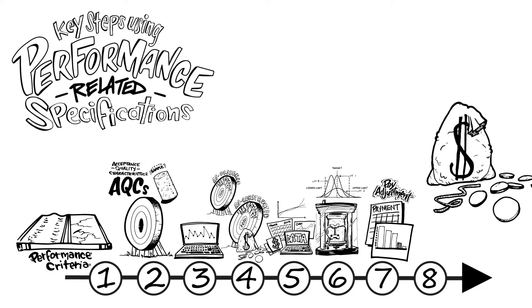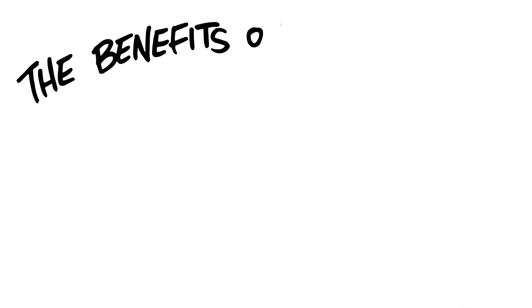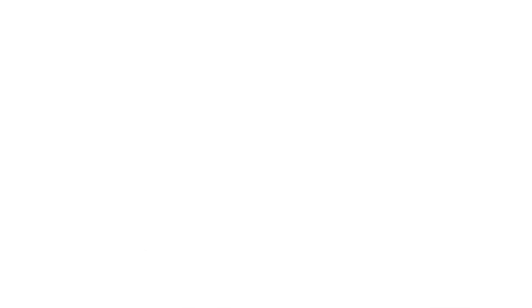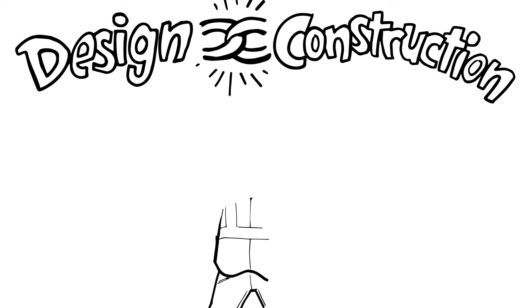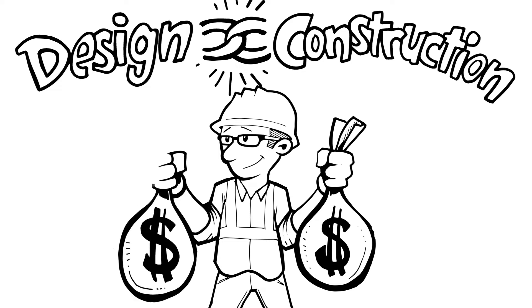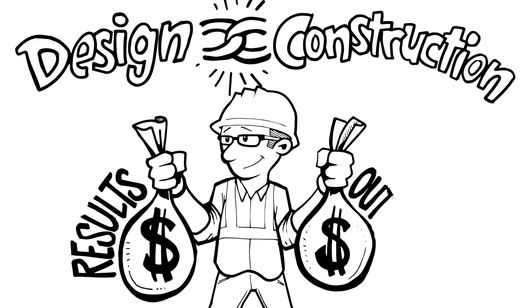Step 8: The contractor is awarded an incentive or assessed a disincentive for that lot based on the combined pay factor applied to the specified bid item. The benefits of implementing performance-related specifications include providing a direct linkage between design expectations and construction quality. For example, the specified design becomes the target which, when achieved, results in the contractor being paid 100% of the bid price for a lot, and when exceeded, results in the contractor being paid an incentive commensurate with agency valuation of the improved performance.